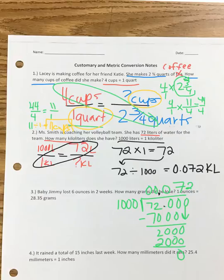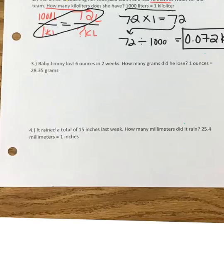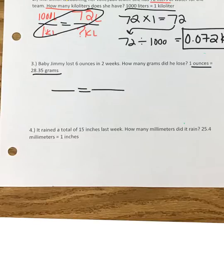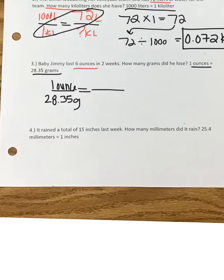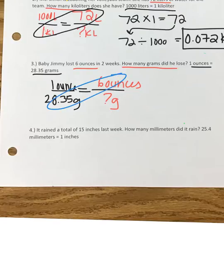The next problem says baby Jimmy lost six ounces in two weeks — how many grams did he lose? The conversion given is one ounce equals 28.35 grams. Set up your proportion: fill in the conversion first — one ounce is 28.35 grams. Then fill in what they gave you: six ounces goes on top, and the unknown is grams. Solve by multiplying your diagonals and dividing by what's left.